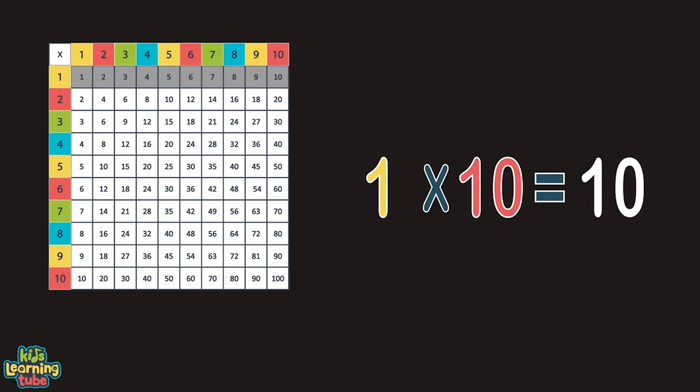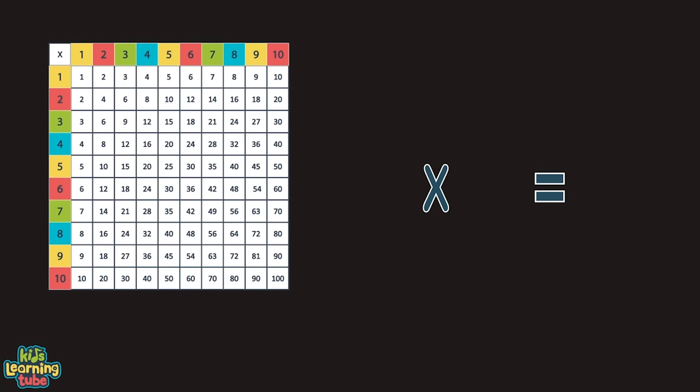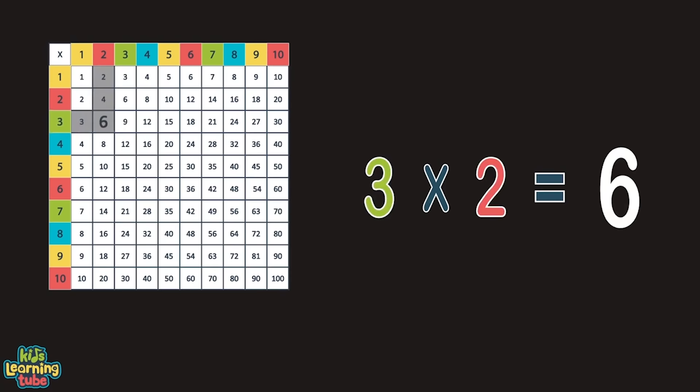Sometime we'll do that again. Now let's move on and count by two. Here we go: two, four, six, eight, ten, twelve. You're doing well. Fourteen, sixteen, eighteen, twenty. That's plenty. This is what you see when counting by three. Here we go: three, six, nine, twelve, fifteen.